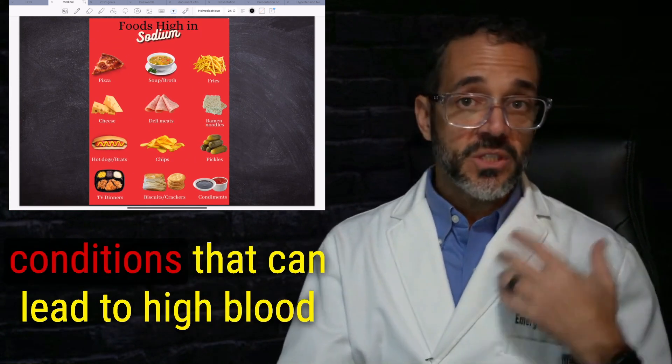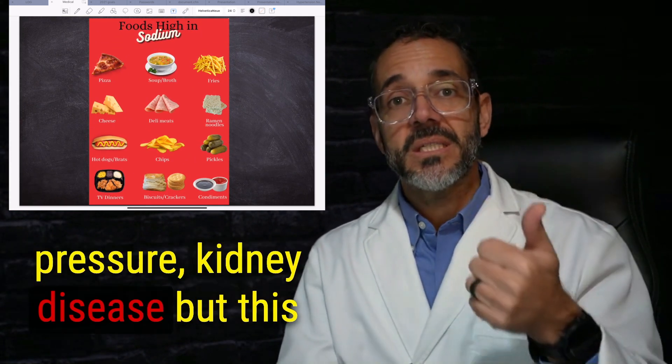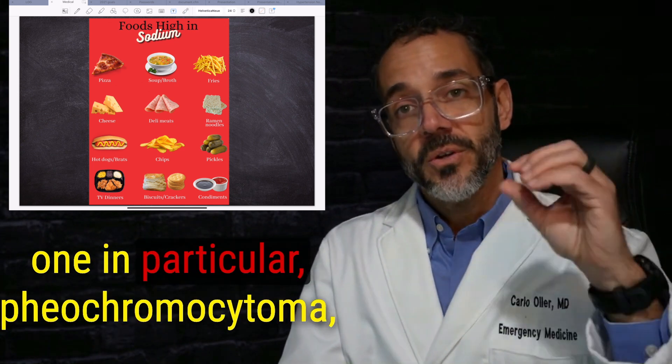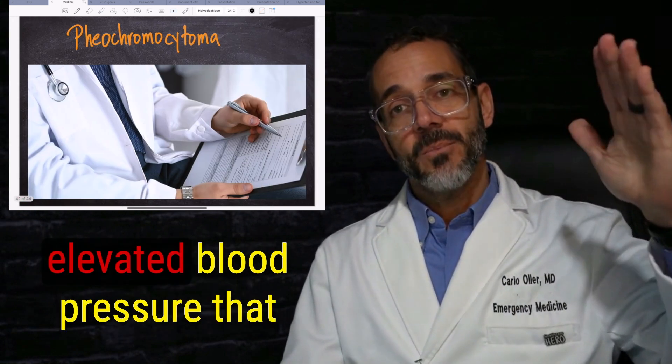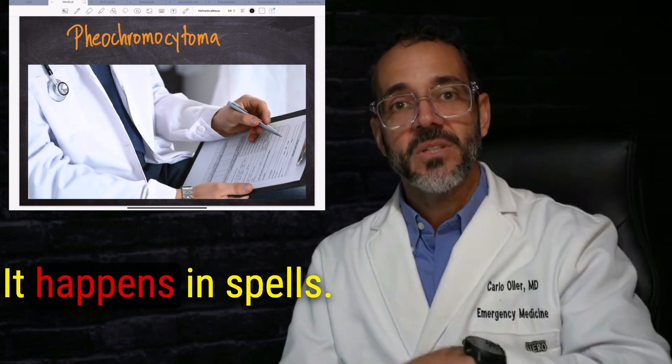And there are multiple medical conditions that can lead to high blood pressure, kidney disease. But this one in particular, pheochromocytoma shows up with acute, highly elevated blood pressure that is episodic. It happens in spells.